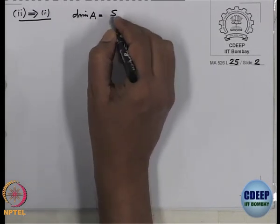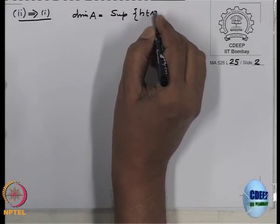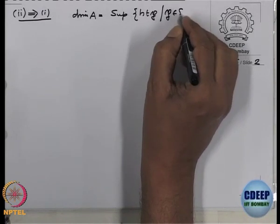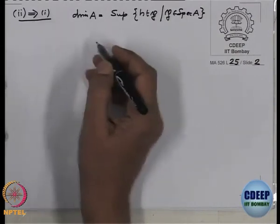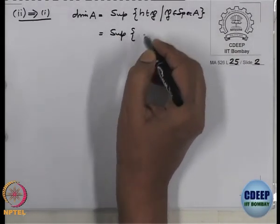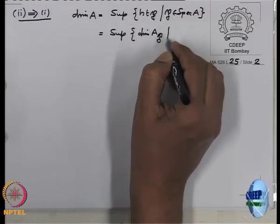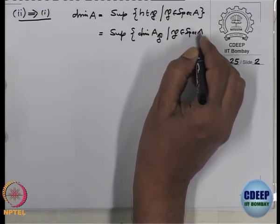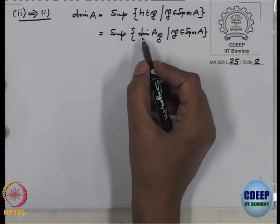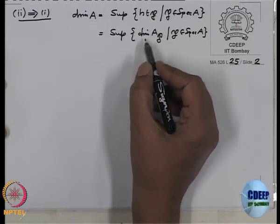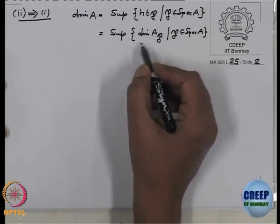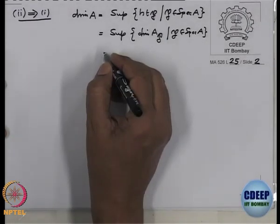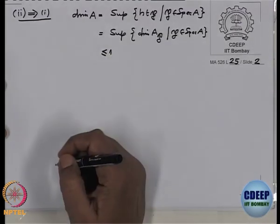Two implies one: we want to prove the dimension bound and that A is integrally closed. The dimension of A is by definition the supremum of the height of P, as P varies in Spec A — equivalently, the supremum of the Krull dimension of A localized at P. For nonzero primes, by condition two, A localized at P is a DVR, so that dimension is one. For the zero prime it's a field. Therefore the dimension equals one, so it's at most one.